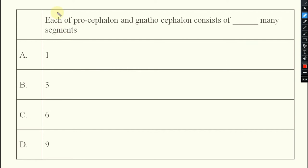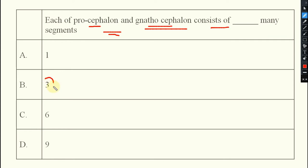Next question: each of procephalon and gnathocephalon consists of how many segments? The answer will be option B, that is three.